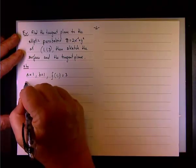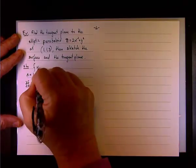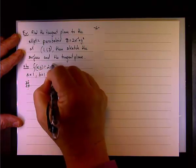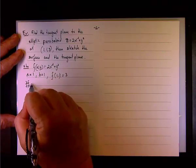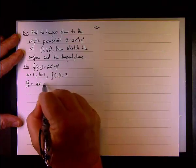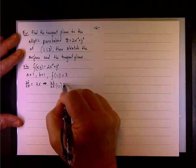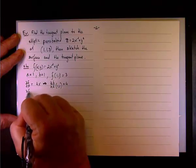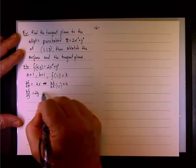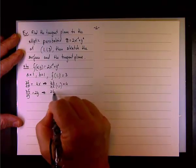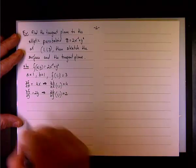And now the partial derivative, del f del x, so f of xy equals 2x squared plus y squared. That would be the surface. Del f del x will be simply 4x, and therefore, del f del x at 1, 1 equals 4. Del f del y equals 2y, del f del y at 1, 1 equals 2.